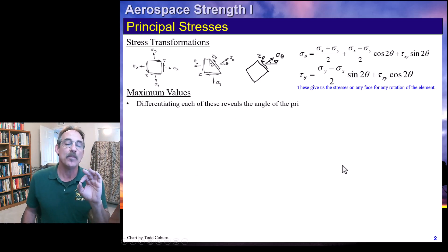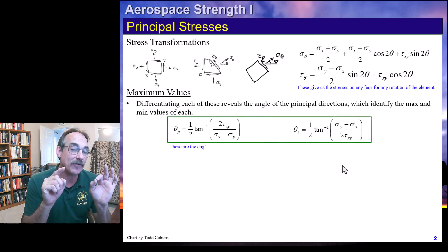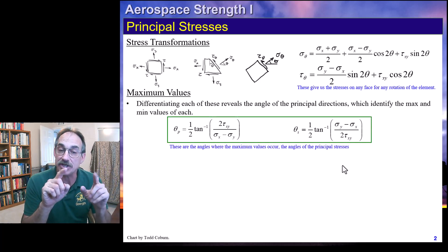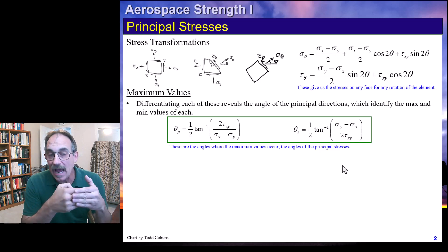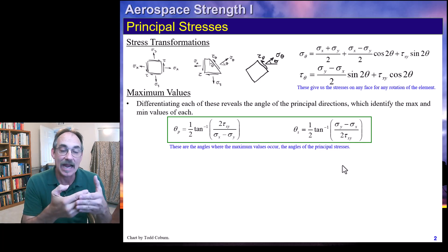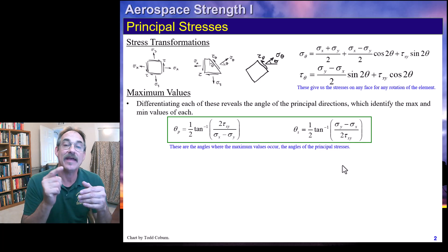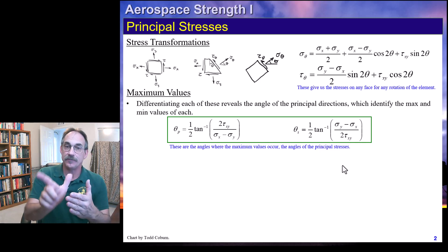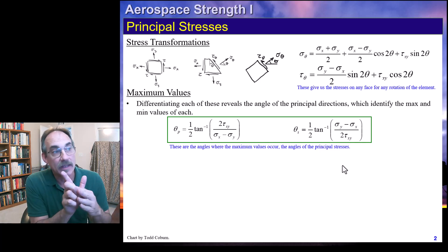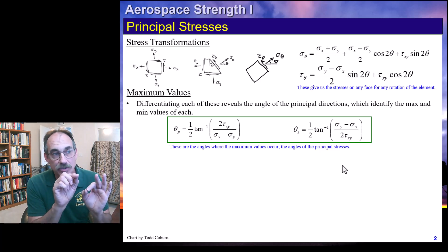If we wanted to know when those values are maximum — those values are changing as we rotate the element — we differentiate those two equations to get the max and min values. We find that the angle at which the normal stress is maximum, theta p, can be calculated with the first equation. The angle at which the shear stress is maximum, theta s, comes from differentiating the second equation. So theta p is the angle at which the maximum principal stresses occur, and theta s is the angle which gives us the maximum shear stress.